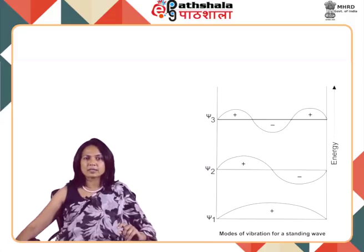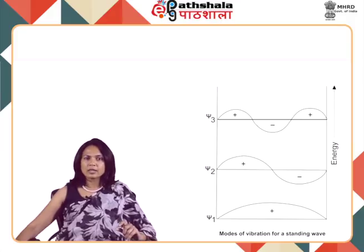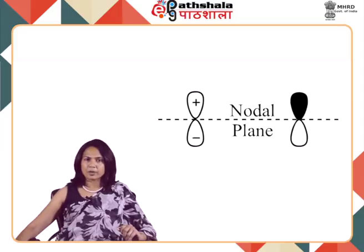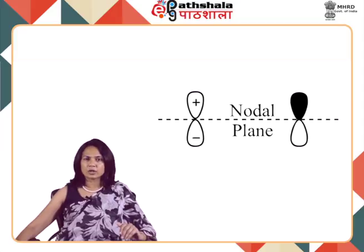The displacement above the nodal plane is conventionally designated as plus, and those below the nodal plane are designated as minus. Since plus and minus signs are associated with charges also, for the sake of avoiding confusion, the relative phase differences are shown by shading of lobes on a p orbital. For p atomic orbitals, the lobes are shown as shaded and unshaded, with the dotted line being the nodal plane.